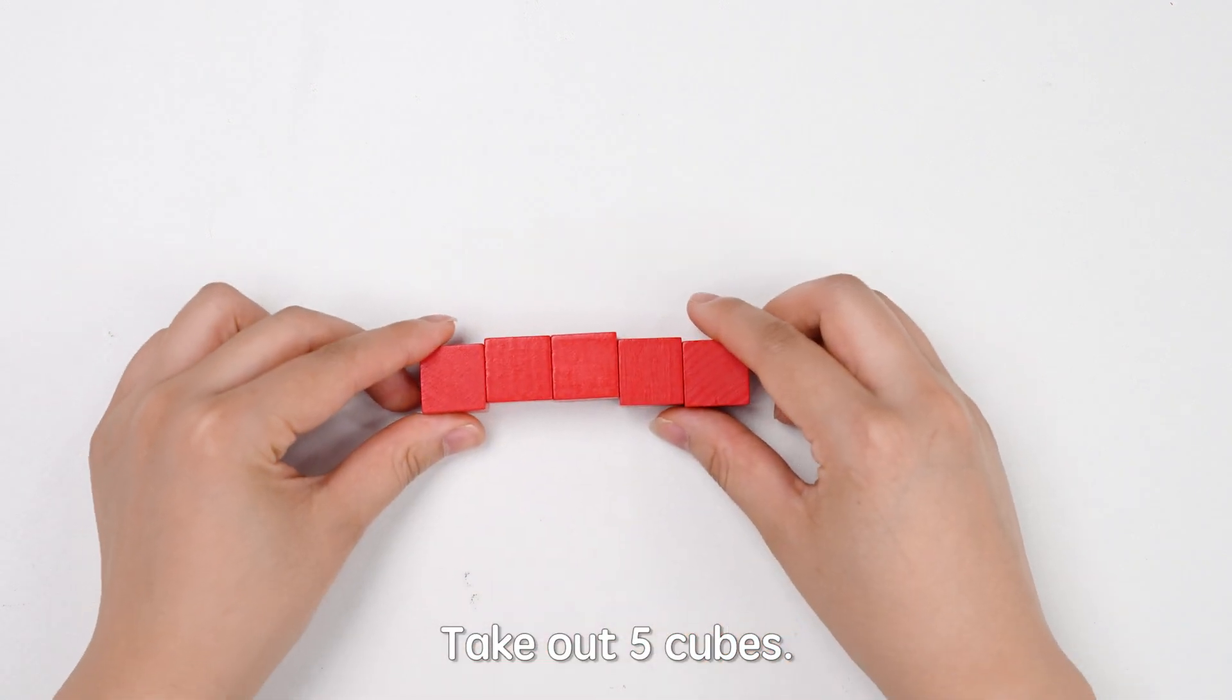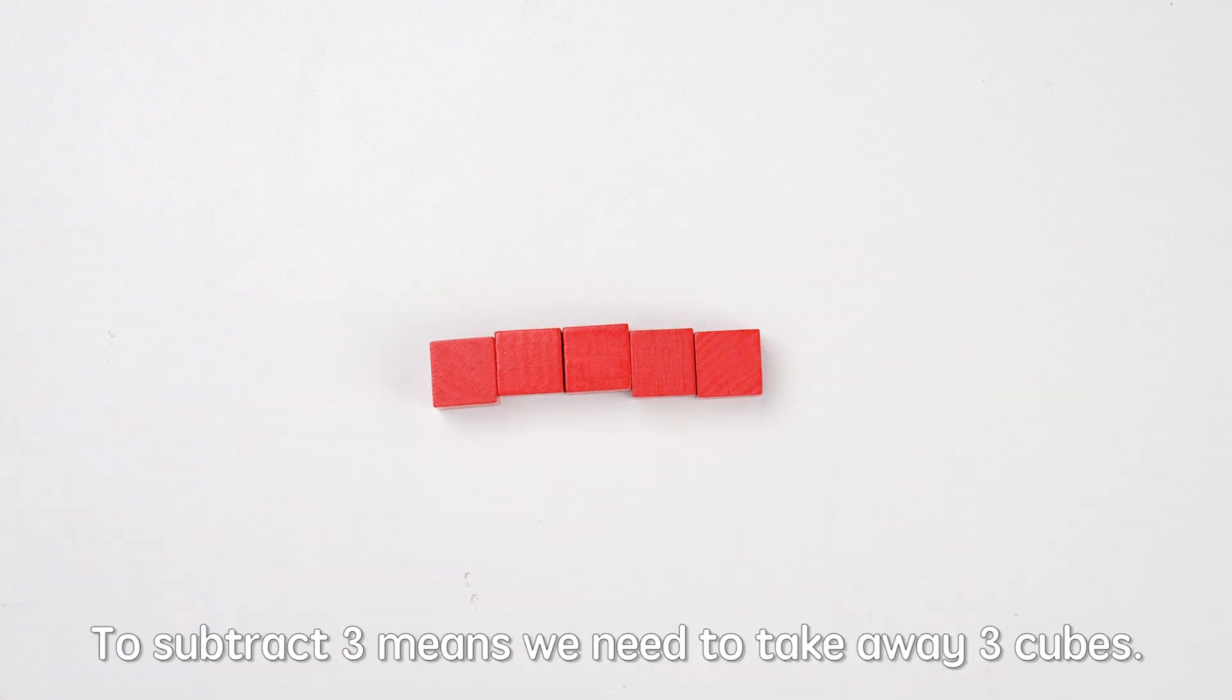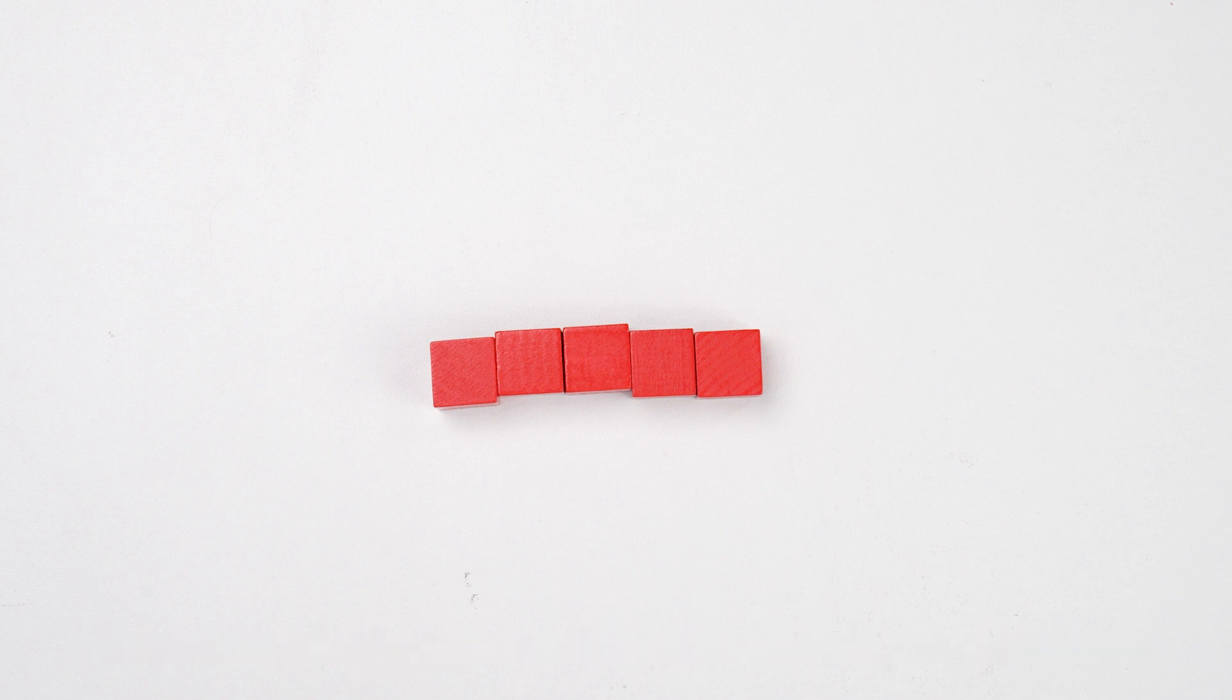What about 5 minus 3? Simple. Take out 5 cubes. To subtract 3 means we need to take away 3 cubes. Let's take away 3 cubes now.